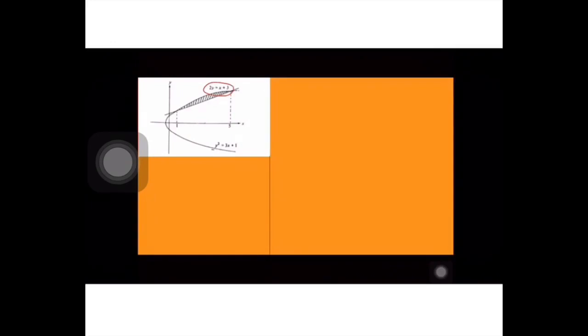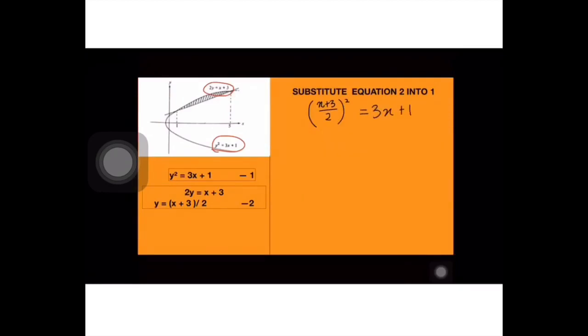Kita nampak kita nak cari volume, mesti kita nak tahu range dia dahulu. Macam mana nak dapatkan 1 dan 5 tu? Kita samakan equation dia, kita sub untuk dapatkan intersection point antara line tu. Kita selesaikan dapat x=1 dan 5. Sekarang kita dah tahu range tu.